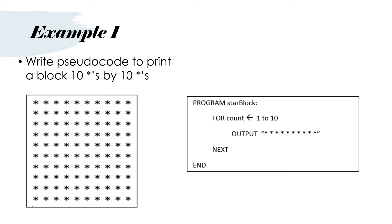Here's an example of how a FOR loop operates. The problem is: write pseudocode to print a block 10 stars by 10 stars. The program looks like this — program star block. FOR count, assign 1 to 10. OUTPUT 10 stars. Then NEXT and then END. Let's look at the count variable in the FOR loop and see how it changes as the FOR loop operates.